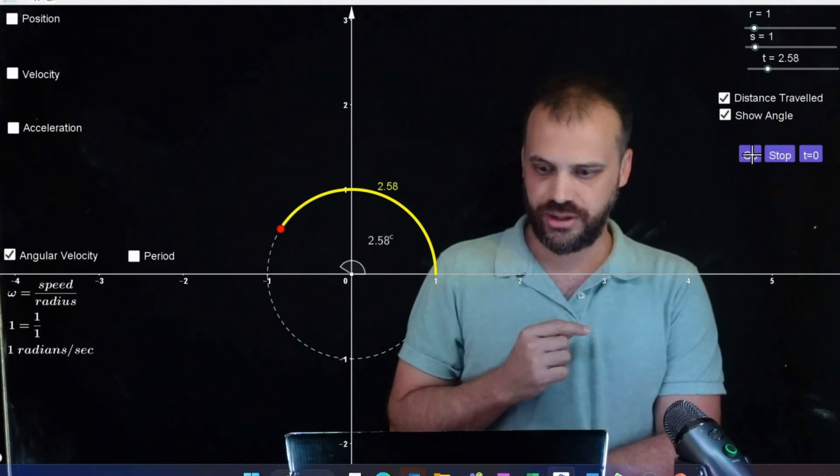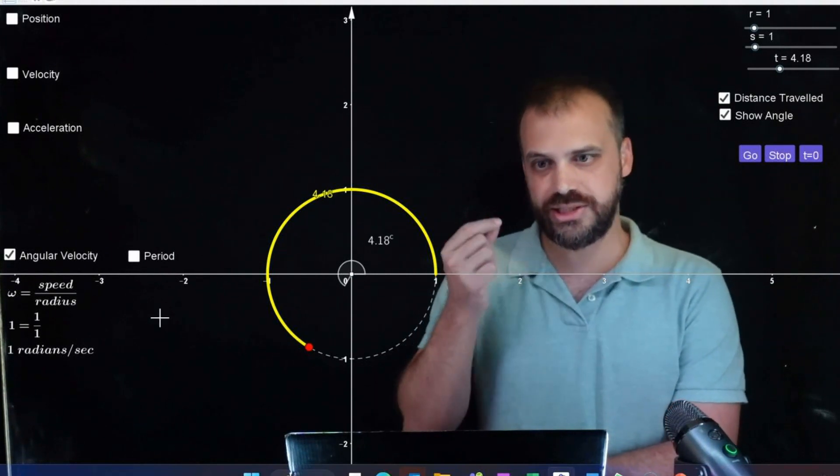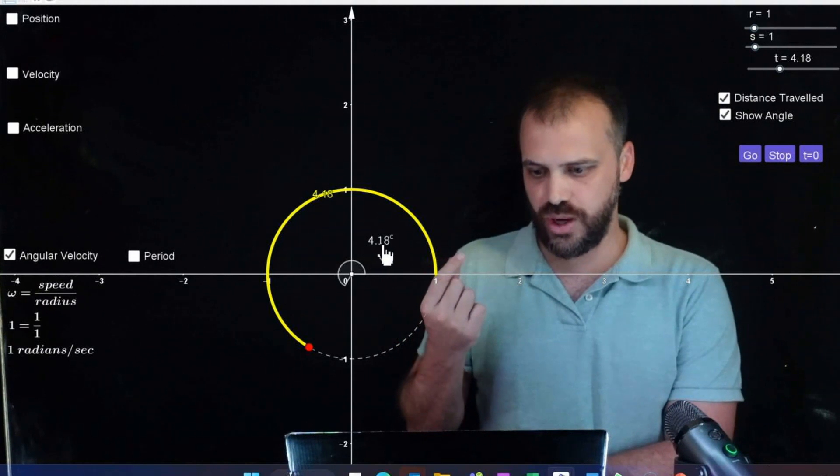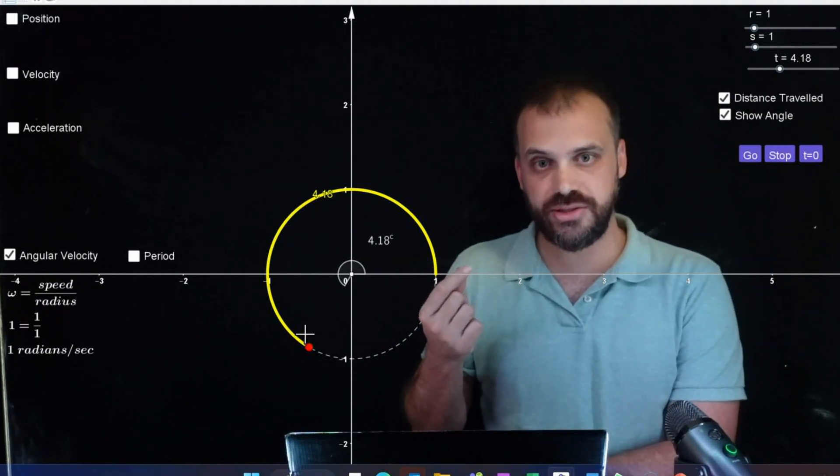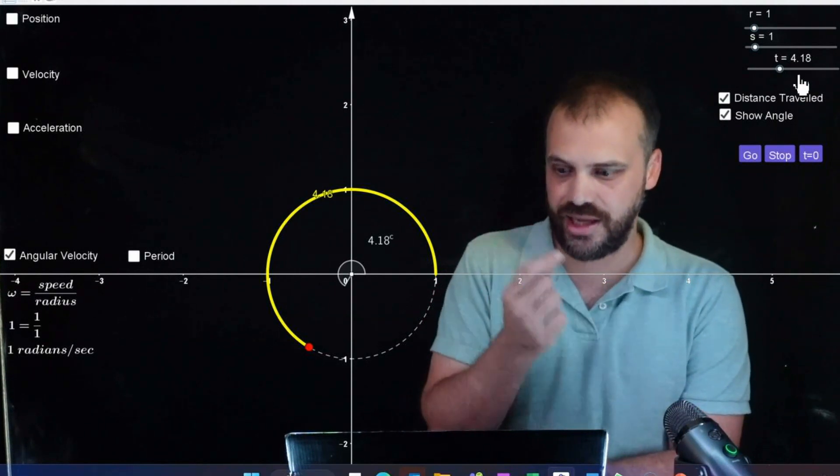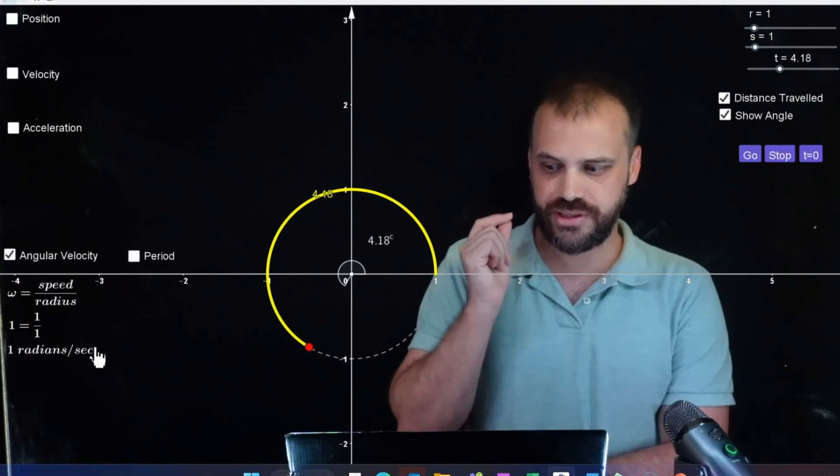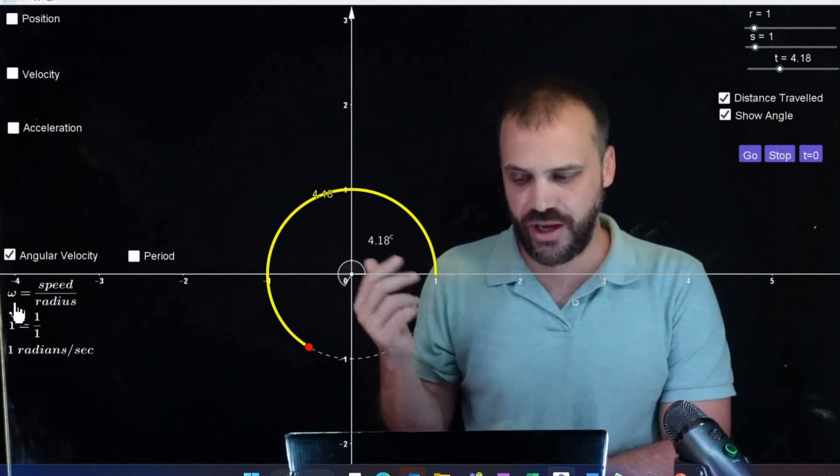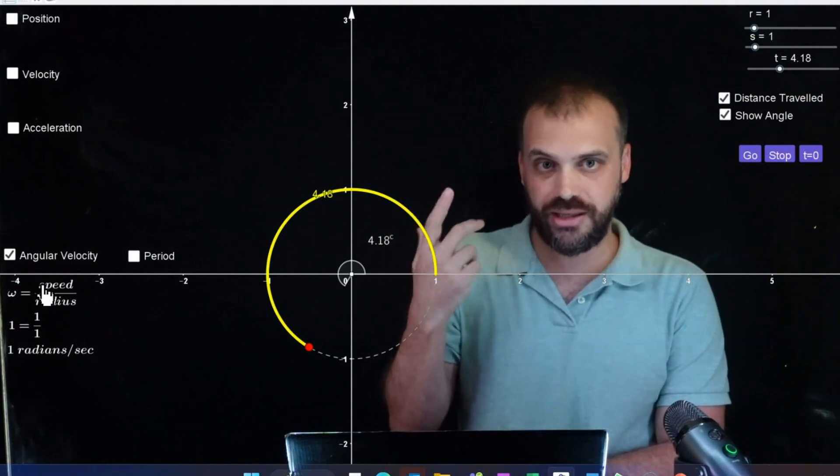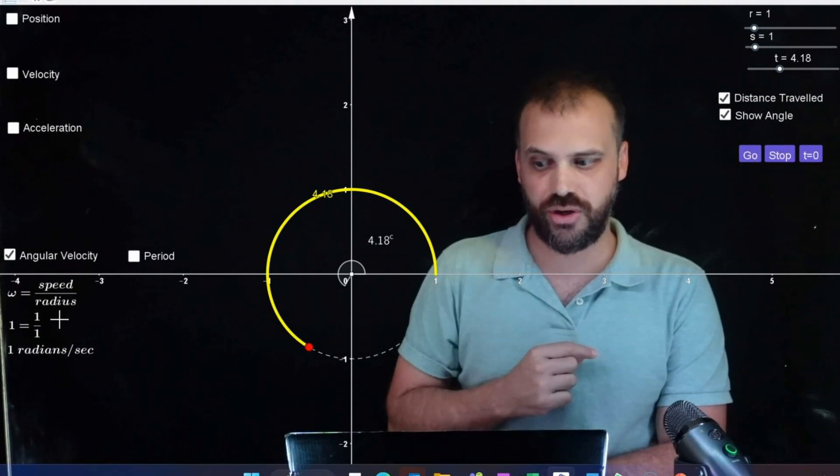If we go a bit further, okay, you can see that's not changing. We're looking at the speed of this object. We have gone 4.18 radians around the circle in 4.18 seconds. We are traveling at one radian per second. Now, the formula for angular velocity: angular velocity is equal to speed in meters per second divided by the radius of the circle.